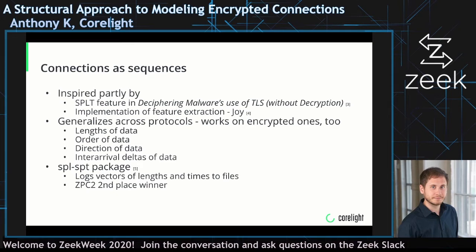Much of this work was inspired by the SPLT feature from a paper titled Deciphering Malware's Use of TLS Without Decryption — it's a really great paper. There's actually an implementation of the system described in the paper called JOI. SPLT stands for Sequence of Packet Lengths and Times. I mention this paper because the authors noted something like a 30% gain in true positives in their classifier based on this feature, and I saw that and thought, that's a really great feature — how else can this be used?